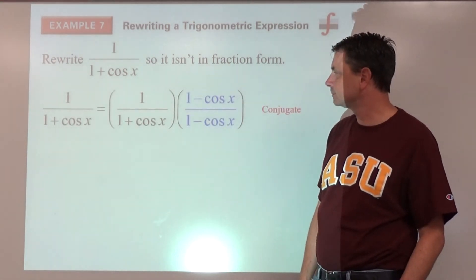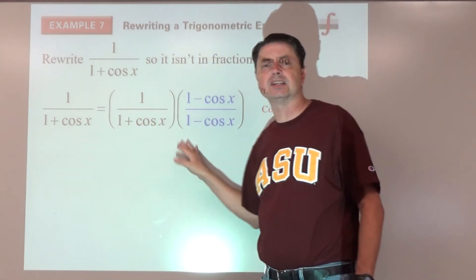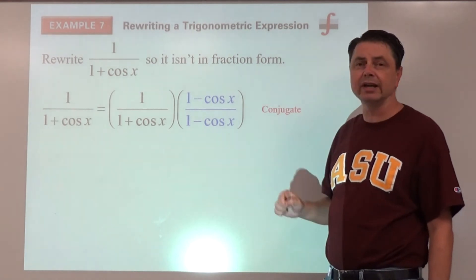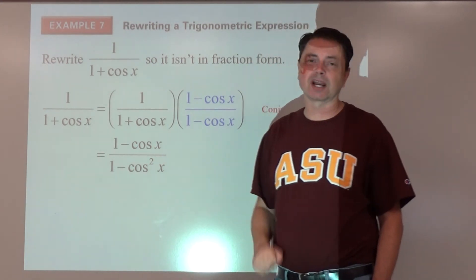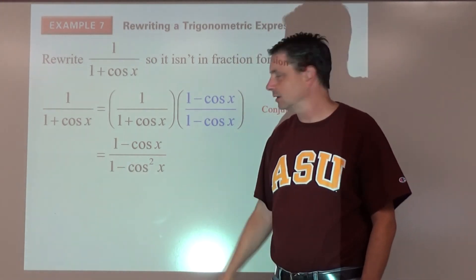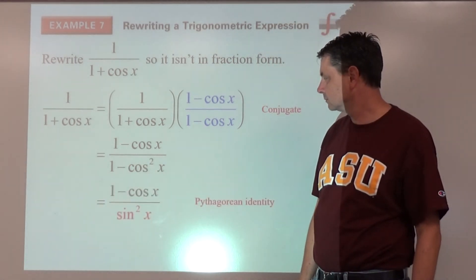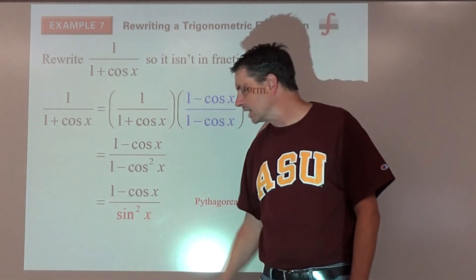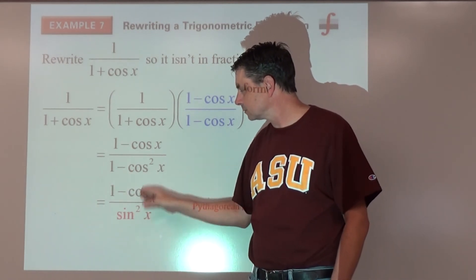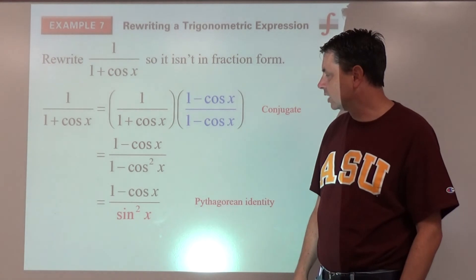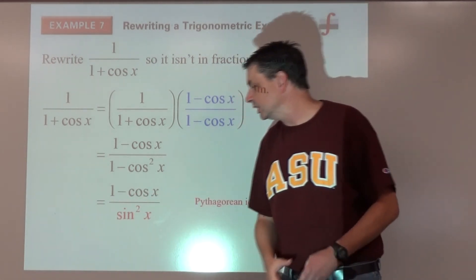When manipulating a binomial denominator, the conjugate is often a good strategy. We multiply top and bottom by one minus cosine x. The numerator becomes one minus cosine x; the denominator becomes a difference of squares — one minus cosine squared x — which is the Pythagorean identity sine squared x. It's still a fraction, so we can apply the reciprocal idea.